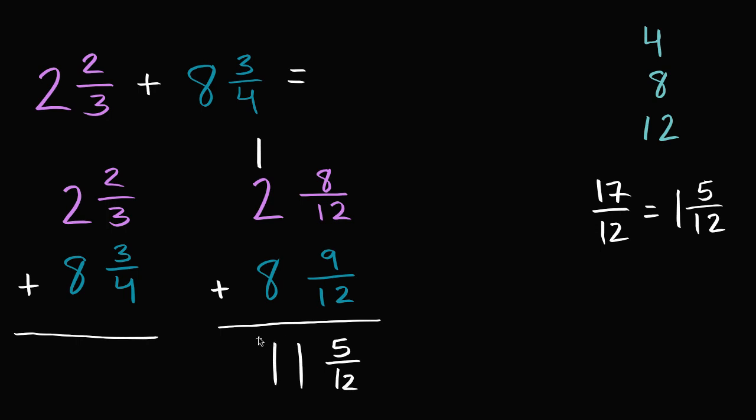Now there's other ways that we could have tackled this. What we could have done is gone from this place right over here, the two and eight twelfths and the eight and nine twelfths, and we could have converted these into improper fractions, then added those improper fractions. So we could have said that this is the same thing as, two is the same thing as twenty-four twelfths, plus eight is going to be thirty-two twelfths.